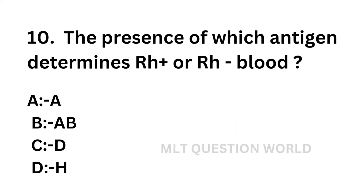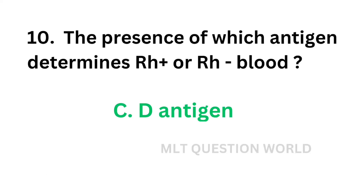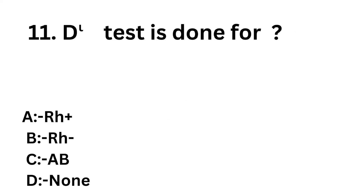Question number 10: The presence of which antigen determines RH positive or RH negative blood? Option A: A antigen, option B: AB antigen, option C: D antigen, option D: H antigen. The correct answer is option C, D antigen. If D antigen is present it means RH positive; if D antigen is absent, it means RH negative.